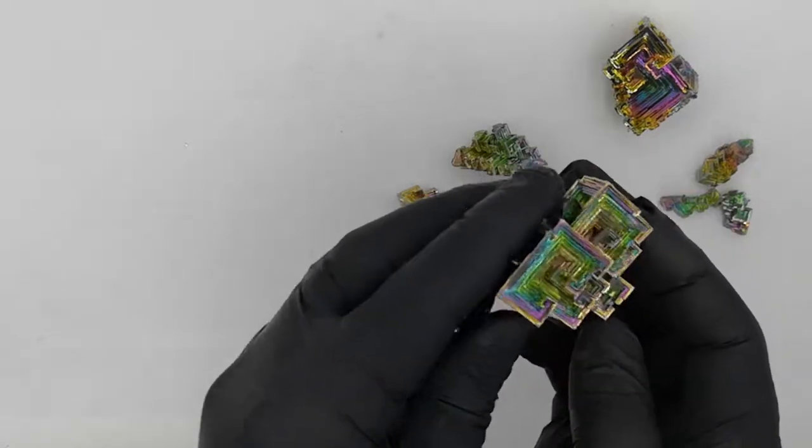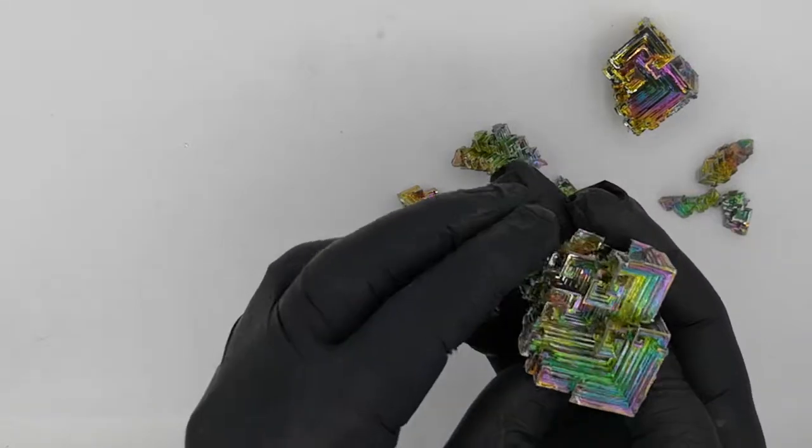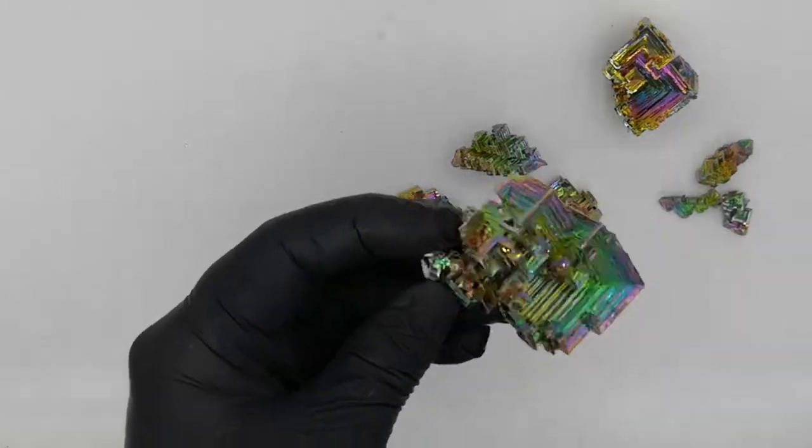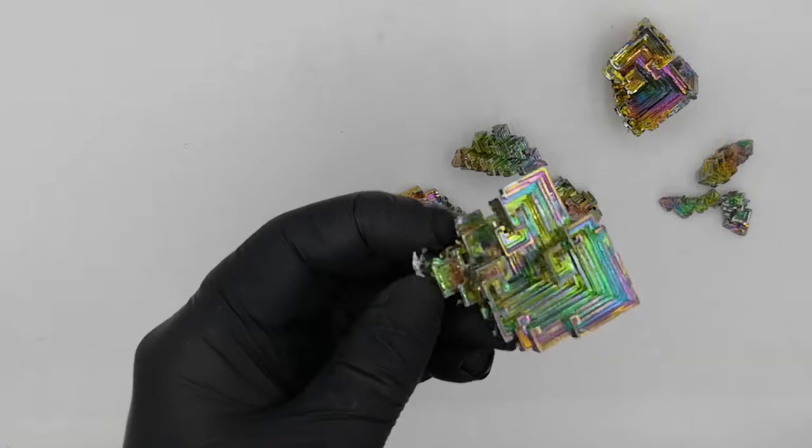But otherwise, if you're careful with it, it's absolutely stunning. One of those things that many collectors like to have. That's it for bismuth. This is Raciel for Eluciteria.